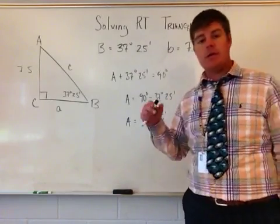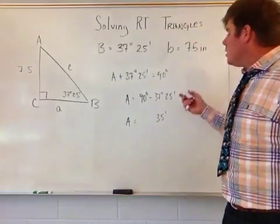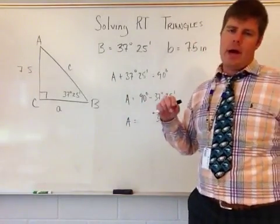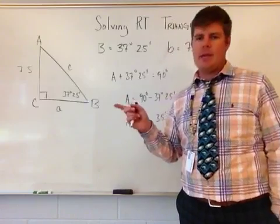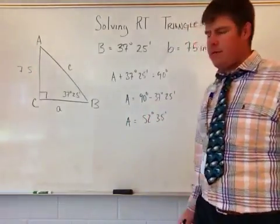When I'm subtracting, what you should know is that A is going to have something with 35 minutes. Now let's think about this furthermore. 25 and 35 make a minute. You've already got 37, so technically you've got 38 minutes. So what is 90 minus 38? Well, 90 minus 30 is 60, minus 8, you get 52. And lo and behold, you get 52 degrees 35 minutes.